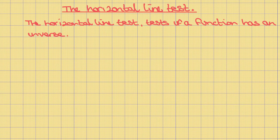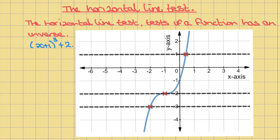The horizontal line test: the horizontal line test checks if a function has an inverse. Not all functions have an inverse. In some cases, in order to have an inverse, we need to limit the domain. Take the graph of f of x equals x plus one, all cubed, plus two. If we perform the horizontal line test, we draw horizontal lines anywhere on the graph and each line should only touch the graph at one point. As you can see, three horizontal lines have been drawn, each touching the graph at only one point, so this graph passes the horizontal line test and does have an inverse.